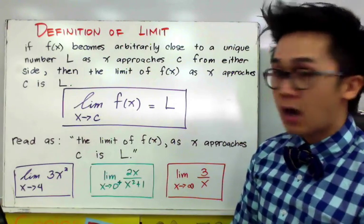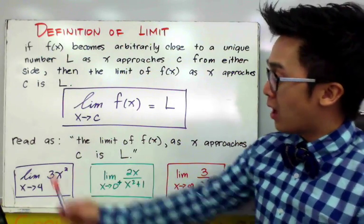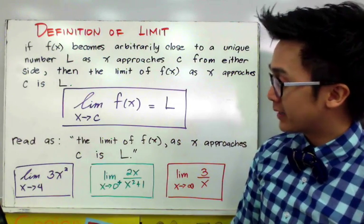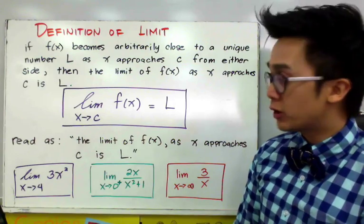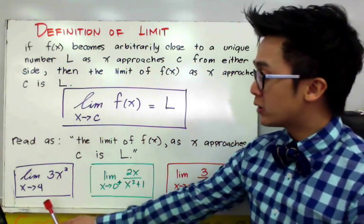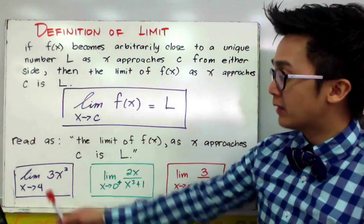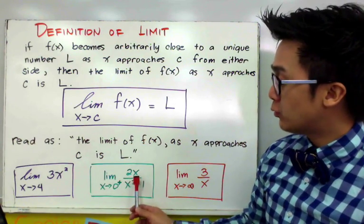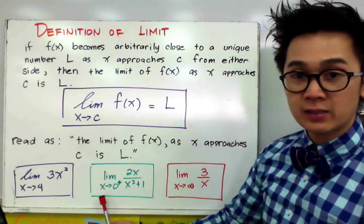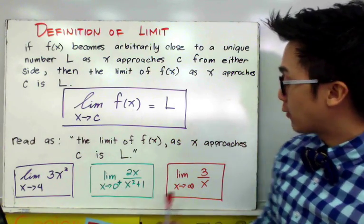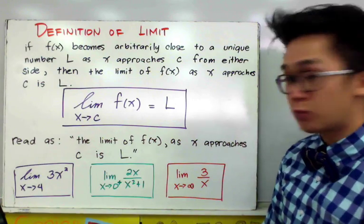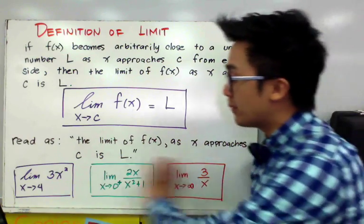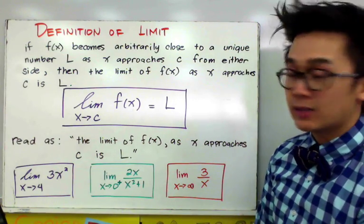The first thing we need to understand about limits is how to read the notation. Whenever you see this notation in calculus, you read it as 'the limit of F of X as X approaches a certain number C, which is equal to L.' We have here some examples: the limit of 3X squared as X approaches 4; the limit of 2X over X squared plus 1 as X approaches 0 from the right; and the limit of 3 over X as X approaches positive infinity.